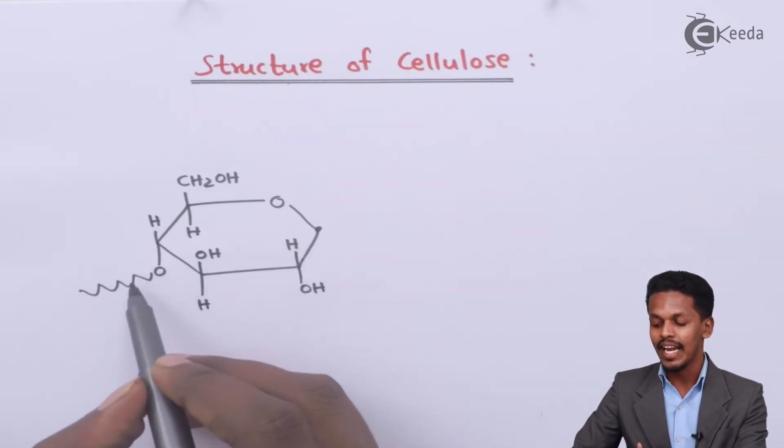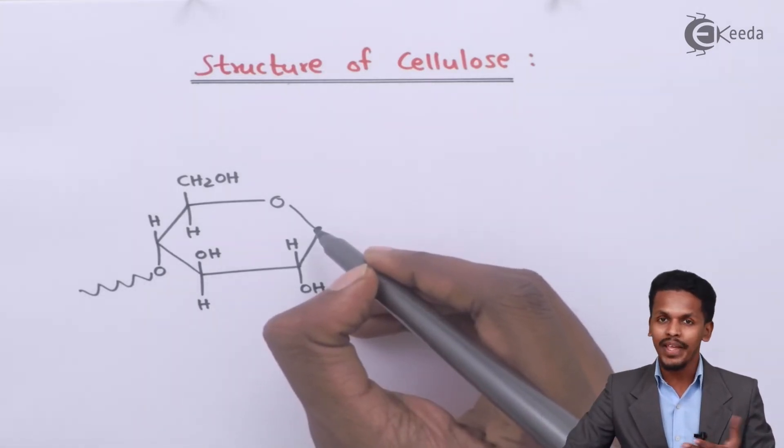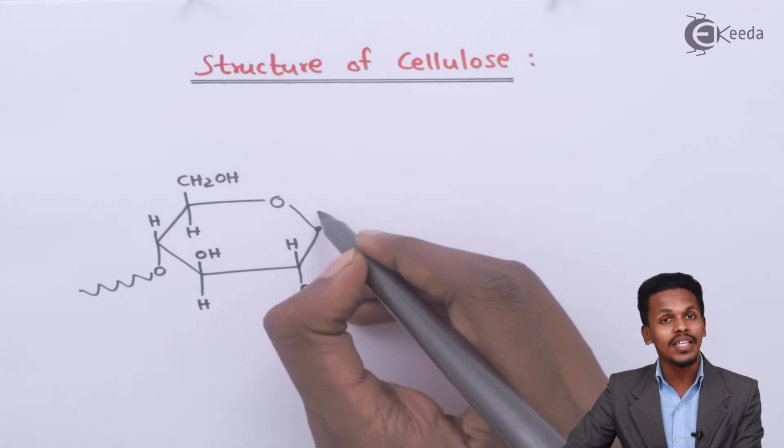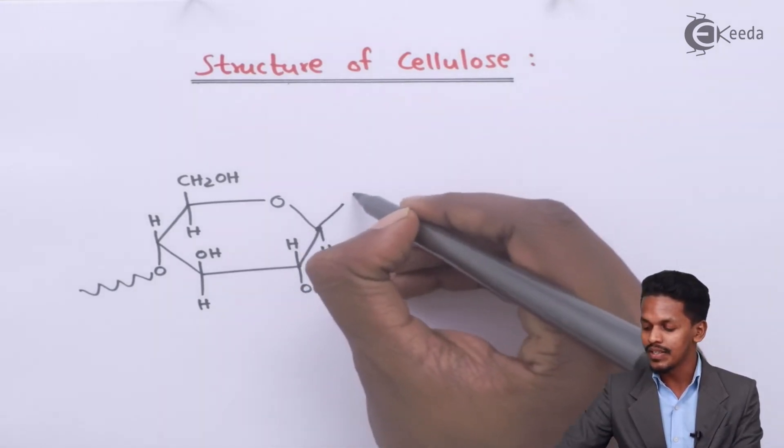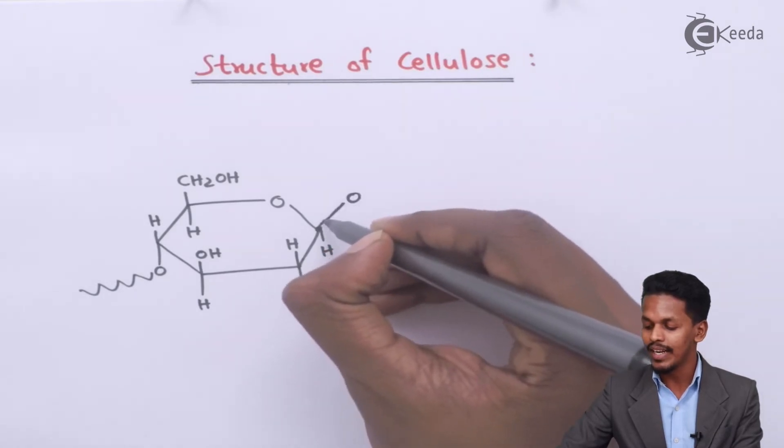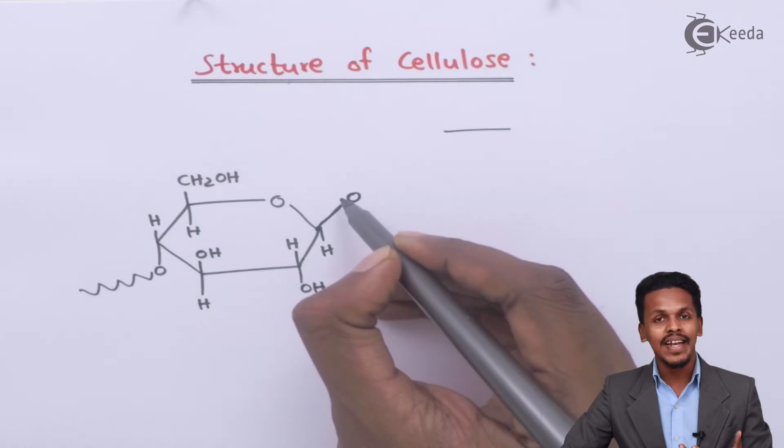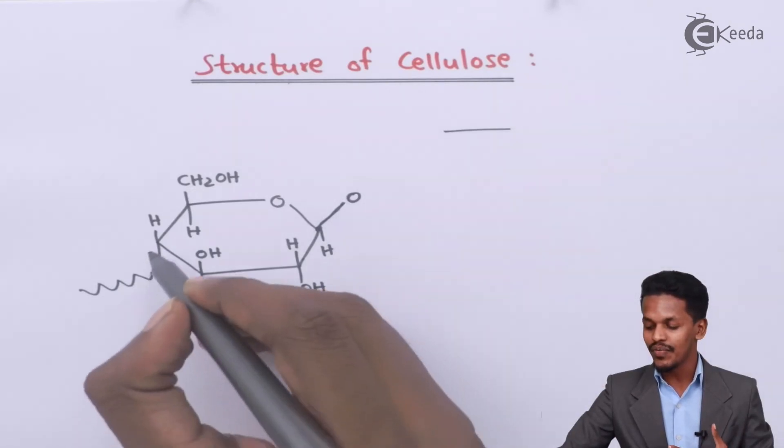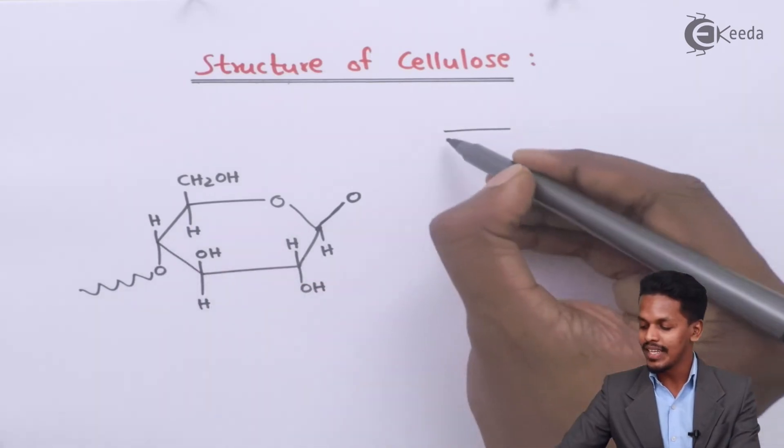And this is how it will form a beta-glycosidic linkage. So similarly to give the structure for the beta-glucopyranose, we have to write the OH on the upside and H towards the downward side. But this oxygen plays a vital role in giving a beta-glycosidic linkage. And this oxygen atom will be combined with the carbon atom which is present on the fourth position.